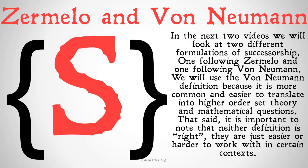In the next two videos, we're going to look at two different formulations of successorship. Remember, these things can be formulated in different ways — we didn't have to define 0 as the null set; most everyone does, but we didn't have to. In terms of successorship, there are a couple of different ways that people have defined it. One version follows Zermelo, and one follows von Neumann. We're going to use the von Neumann method going forward because it's more common and easier to translate into higher-order set theory and mathematical questions, though it will be a little more complicated. It's important to note that neither definition is right — they're just easier or harder to work with in certain contexts.